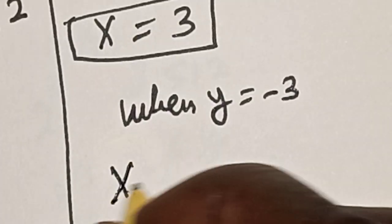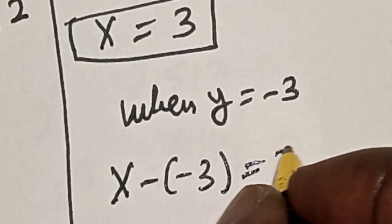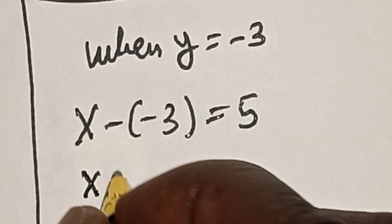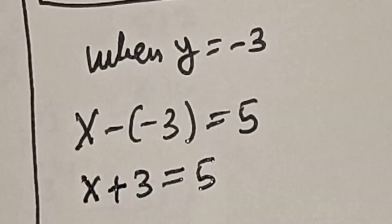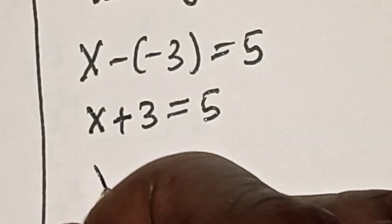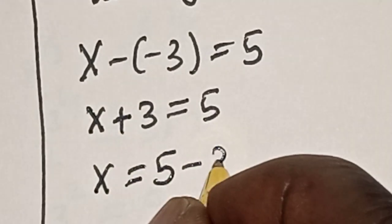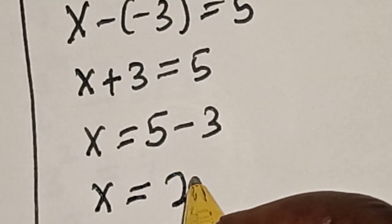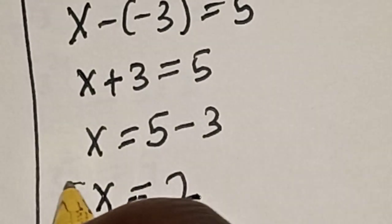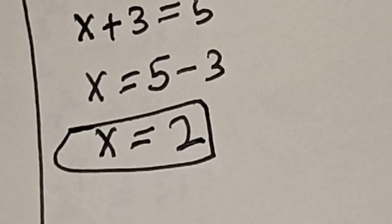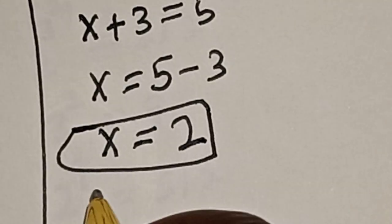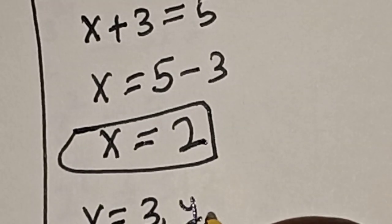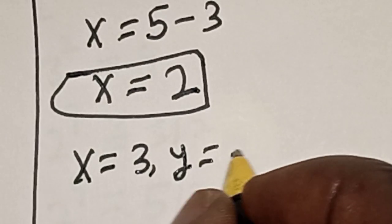When y is equal to minus 3, we have x minus (minus 3) is equal to 5. Then x plus 3 is equal to 5, so x is equal to 5 minus 3, giving x is equal to 2. That is the second value of x. Therefore the solutions are: x is equal to 3 and y is equal to minus 2, or x is equal to 2 and y is equal to minus 3.